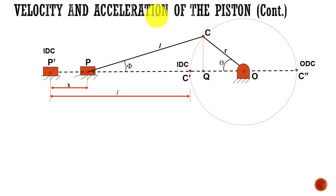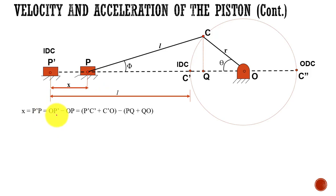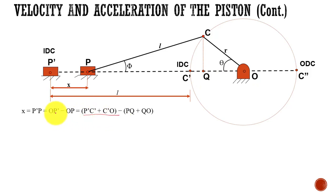The displacement of the piston is obtained by finding the distance from P-dash to P, which is X. For this instant, the crank has traveled to angle theta and the piston has traveled distance X from IDC. This distance P-dash P is equal to OP-dash minus OP. OP-dash is equal to P-dash C-dash plus C-dash O, and this entire expression represents OP-dash.